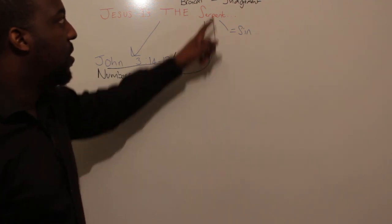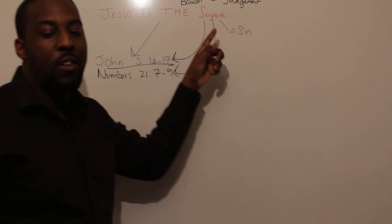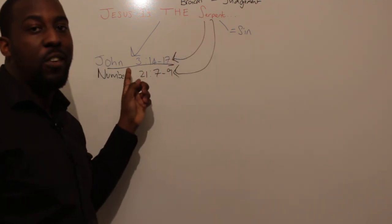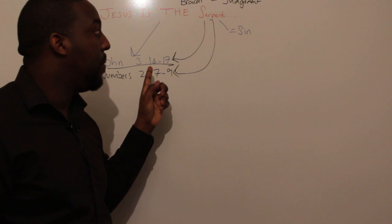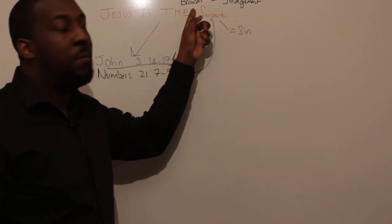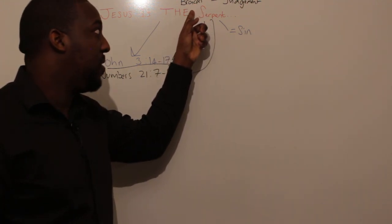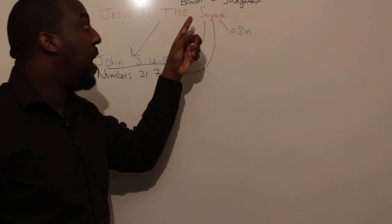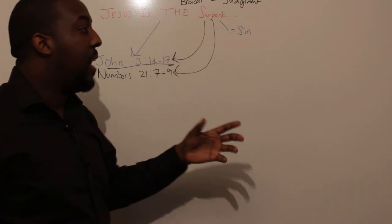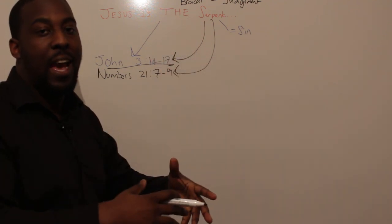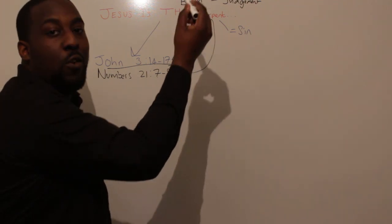The same way here in John 3, verse 14 to 17, when Jesus is saying, just like the brazen serpent in the wilderness was lifted up, even so must I be lifted up. He's basically telling Nicodemus that look, I'm going to become sin and I'm going to be judged, and anyone who looks up to me will live.